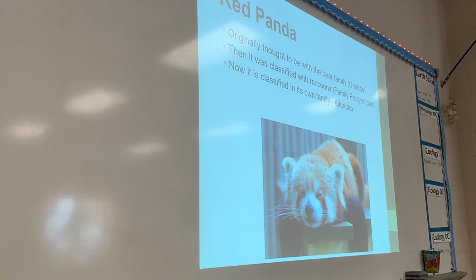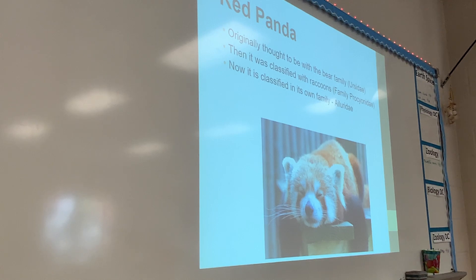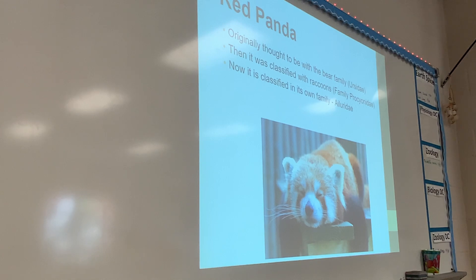We talked about this one before as well - the red panda. Originally, it was thought to be from the bear family, which is Ursidae. Then it was classified with the raccoons, which is Procyonidae. And then finally they said, 'Yeah, we don't know what it is.' So it got its own family, which is Ailuridae, and that's where it has been for a while. That's why it's called a panda, because pandas are in the family Ursidae. It's not even really a panda.